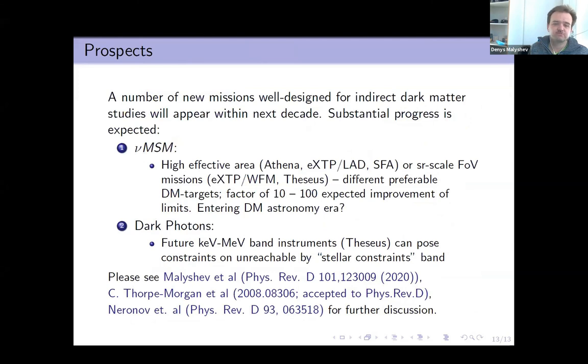My last slide is just prospects for sterile neutrino. I would just like to leave you with it and say that hopefully within 10 years we'll enter dark matter astronomy era with nice large area and broad field missions. We'll have much improved constraints on sterile neutrinos and dark photons or we'll finally detect something. If you are interested in more details for all these missions, please see all these papers. I will ask organizers to upload it somewhere or put it to the Slack channel. Thank you for listening and organizing this conference.